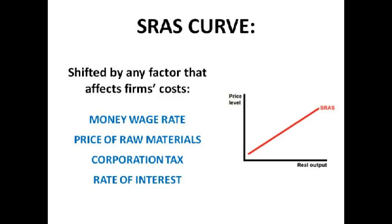Now we're going to split this down into short-run aggregate supply and long-run aggregate supply. The short-run aggregate supply curve assumes that firms' costs remain the same — they don't change. If we want to shift the short-run aggregate supply curve, that's the impact of firms' costs on the amount being supplied. There are four big factors that increase firms' costs: money wage rates, the price of raw materials, corporation tax, and the rate of interest. Wage rates and raw materials cause costs to rise, so that's a left shift. If they fall, costs are falling, so firms will be paying less — that'll be a right shift because more firms are able to enter the market.